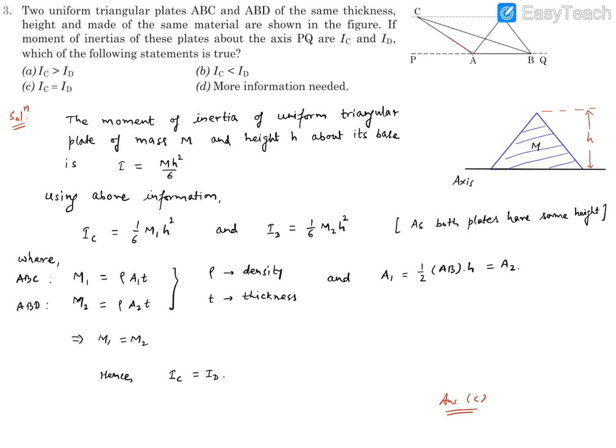So ACB is this triangle, ADB is this triangle. And this height is equal, this height is equal. Thickness is equal, same material. That means density is equal.